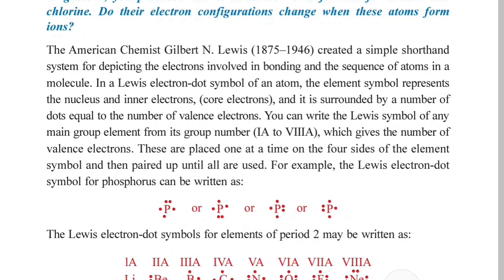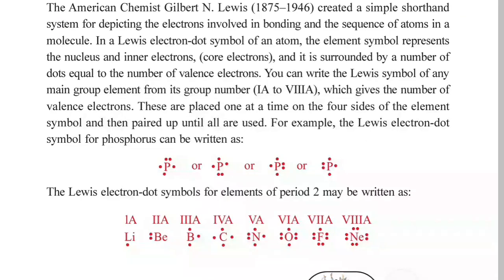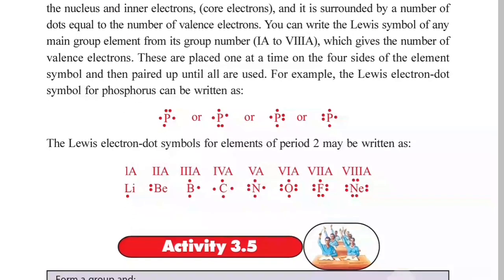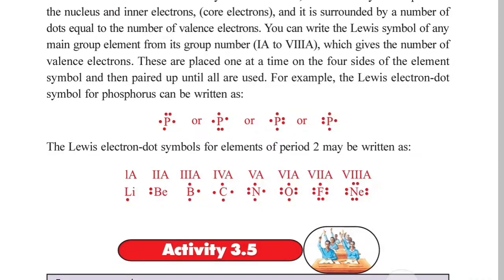These dots are placed one at a time on the four sides of the element symbol, and then paired up until all are used. This is how it is done.